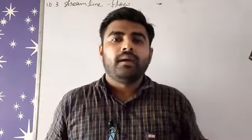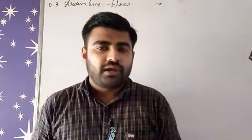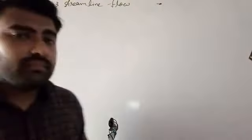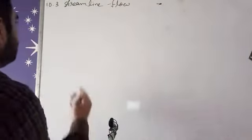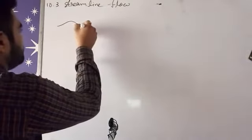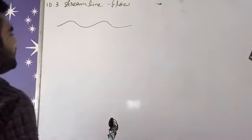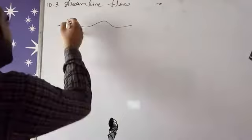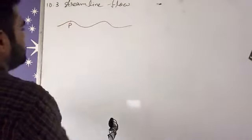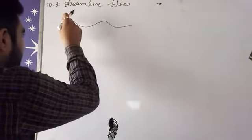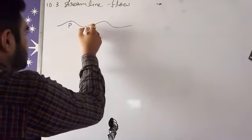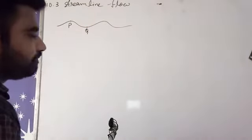For example, as I have drawn the figure here, whatever fluid we have, it's flowing up and down. Basically here at this point it has some velocity. When that same particle goes ahead, here it will have some different velocity.